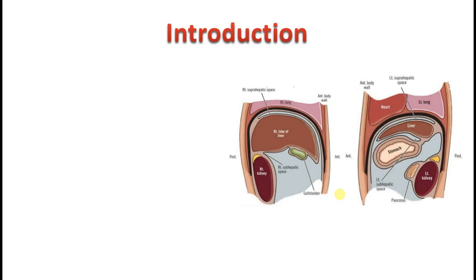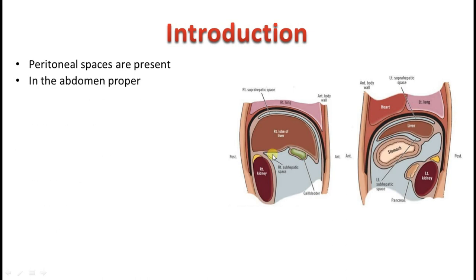First, let us understand the subphrenic spaces. What are actually subphrenic spaces? They are spaces in the peritoneal cavity. Apart from the peritoneum lining the viscera — like your liver, spleen, or stomach — there are certain spaces in between these viscera and they are called as the peritoneal spaces. These spaces are seen in the abdomen proper, mainly concentrated around the gastrointestinal tract. There are also spaces in the pelvis, such as between the uterus and the rectum — the recto-uterine pouch — especially in the case of females.